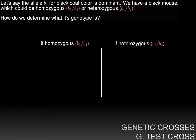If it's black, it could be either B1 over B1, homozygous for the black allele, or this black mouse could also be heterozygous, B1 over B2, since the B1 allele or the black trait is dominant. And the question is, how can we determine what genotype this mouse has?